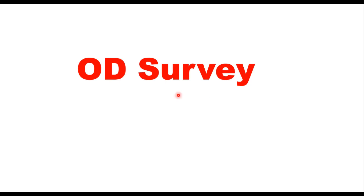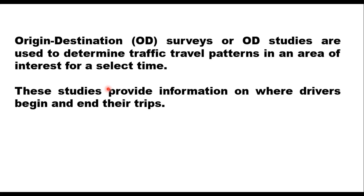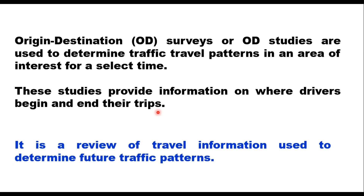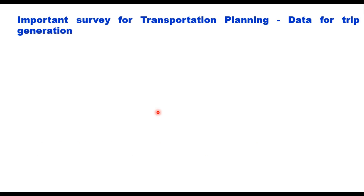Today we will discuss OD survey — O means Origin, D means Destination. Origin and destination surveys are used to determine traffic travel patterns in an area of interest for a select time. These studies provide information on where drivers begin and end their trips. It is a review of travel information used to determine future traffic patterns. The purpose of this survey is to collect data about actual trips made in the project's study area.